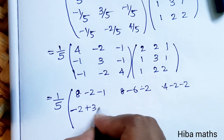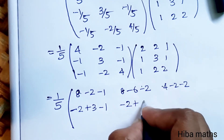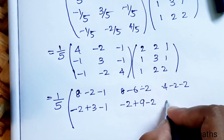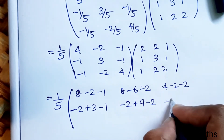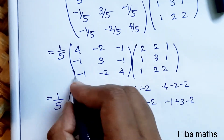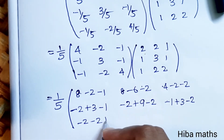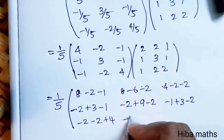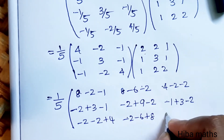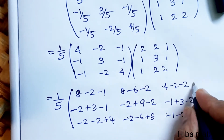Continuing: minus 2 plus 4 minus 2; minus 6 plus 8 minus 1; minus 2 plus 4 — 2s are 8. For the third row entries: minus 1 minus 2 plus 4.